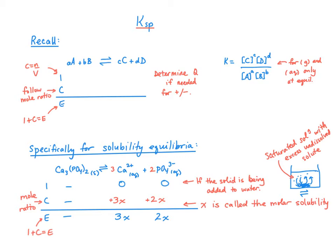Set up the ice table. Now, if the solid's being added to water, then we don't have any calcium or phosphate ions there, and so the initial concentrations are just zero. Being that this is a solid, it's not going to have any impact in the calculation of K, and so we blank that, so omit it from the ice table. So that's going to simplify our calculations also.